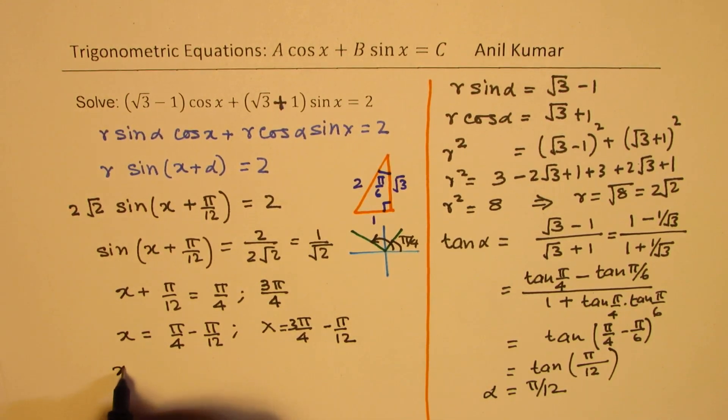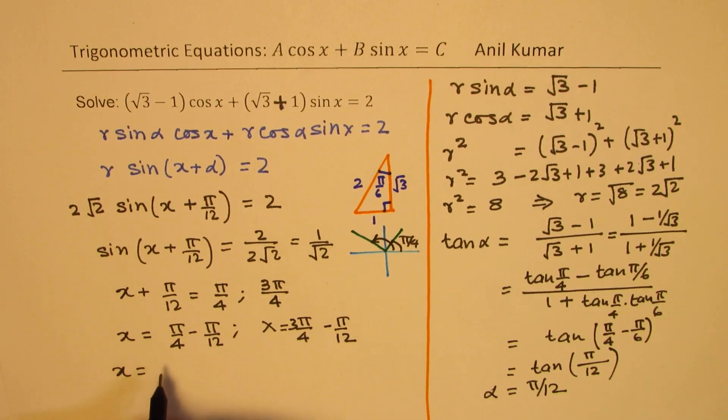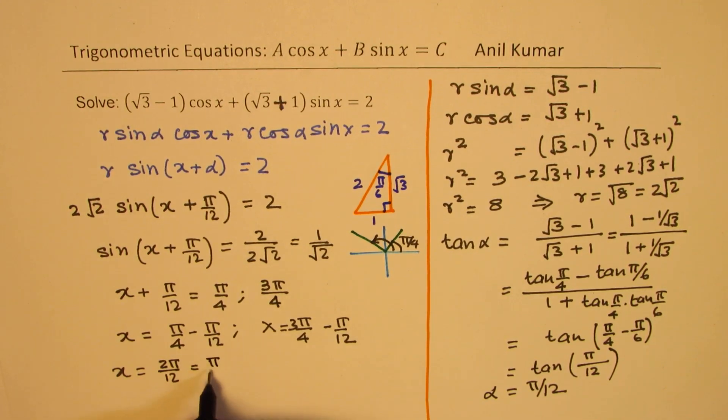So the first one gives us, taking 12 as the common denominator, 3 minus 1 is 2 pi by 12, or pi by 6.